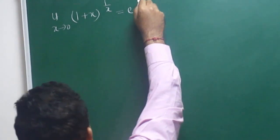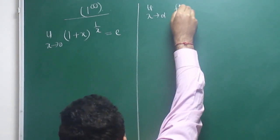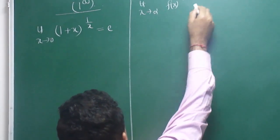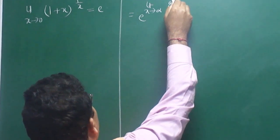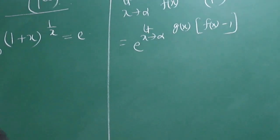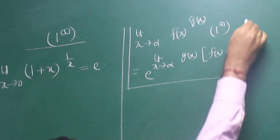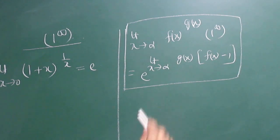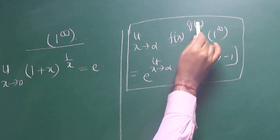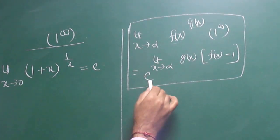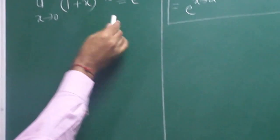The basic pattern of this function is: limit x tends to alpha, f(x) to the power g(x). If it is in the form 1 to the power infinity, then it can be written as e to the power limit x tends to alpha, g(x) into f(x) minus 1. This is what we have to do. For all such questions we can apply this pattern — you have to memorize this. If f(x) gives 1 and g(x) gives infinity, the answer is e to the power of that limit.